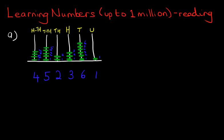So that is our number: four, five, two, three, six, one. It's good practice to put a comma between the thousands and the hundreds — there we go. That makes it easier to read.